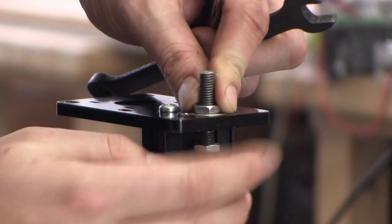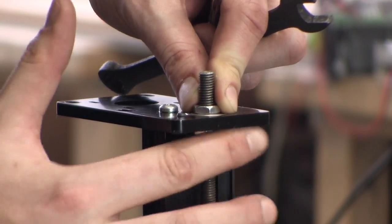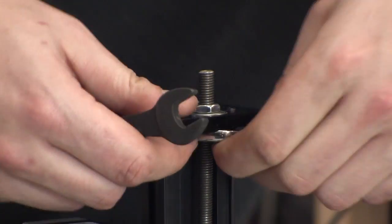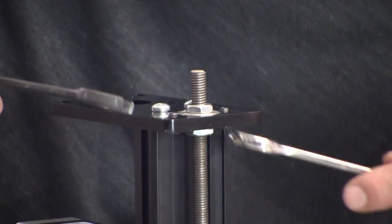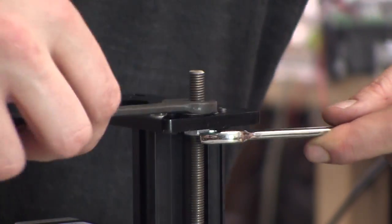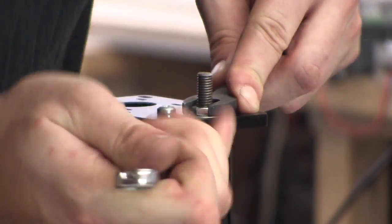Next, you'll want to snug up the bottom hex nut all the way to the bearing without changing the position of the top hex nut on the threaded rod. You'll want both of these nuts to be very tight against the flanged bearing.